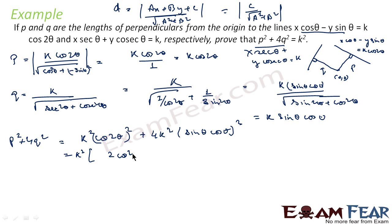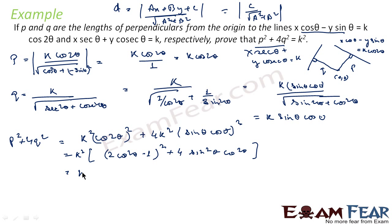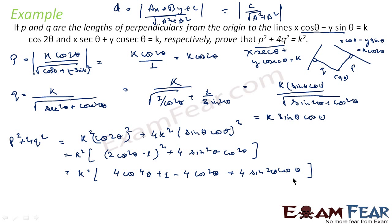Using cos2θ = 2cos²θ − 1, we expand cos²(2θ) = (2cos²θ − 1)². So p² + 4q² = k²·[(2cos²θ − 1)² + 4·sin²θ·cos²θ], which expands to k²·[4cos⁴θ − 4cos²θ + 1 + 4sin²θ·cos²θ].